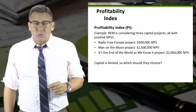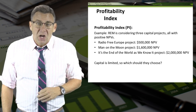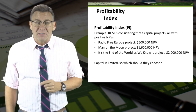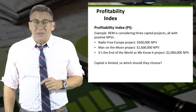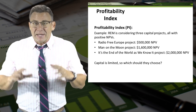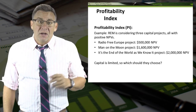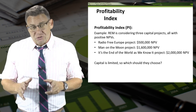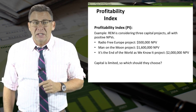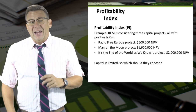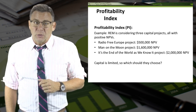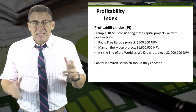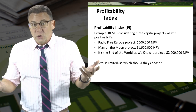An example is the best way to demonstrate this. REM is considering three capital projects, all with positive net present values. The Radio Free Europe project has a net present value of $500,000. The Man on the Moon project has a net present value of $1.6 million. The It's the End of the World as We Know It project has a net present value of $2 million. Since capital is limited, which should they choose?